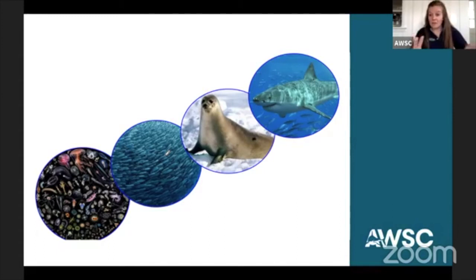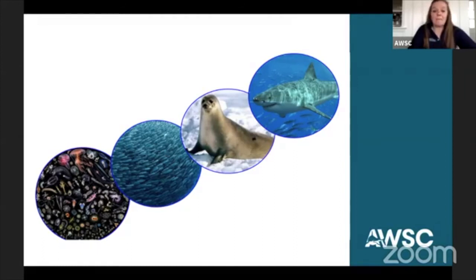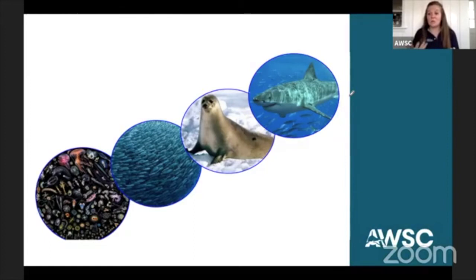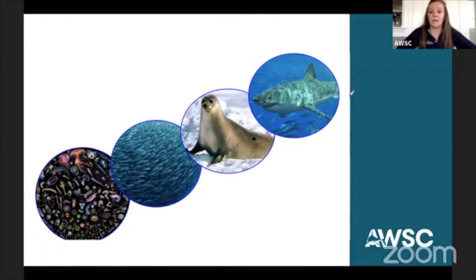Now that we understand those terms — producer, consumer, predator, prey — the next piece to add is the decomposer. When something dies in the ocean, as that body sinks down to the ocean floor, it is still a food source. Energy is still being transferred to those decomposers: different types of bacteria and worms living on the ocean floor that feed on that dead, decaying organic material.